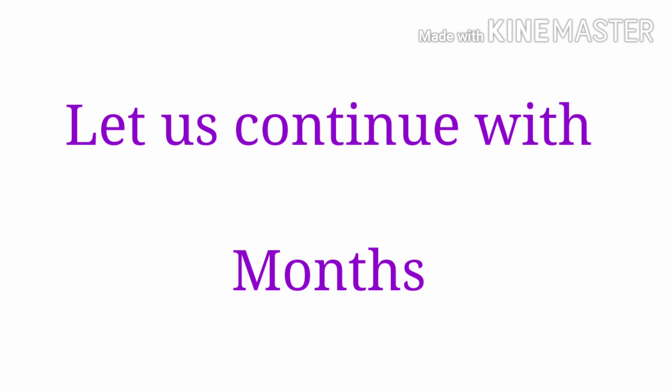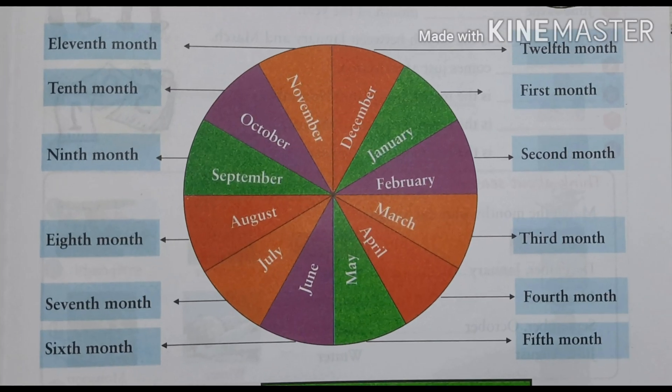Already, you have learned the 12 months. In a year, how many months? 12 months. January is the first month.